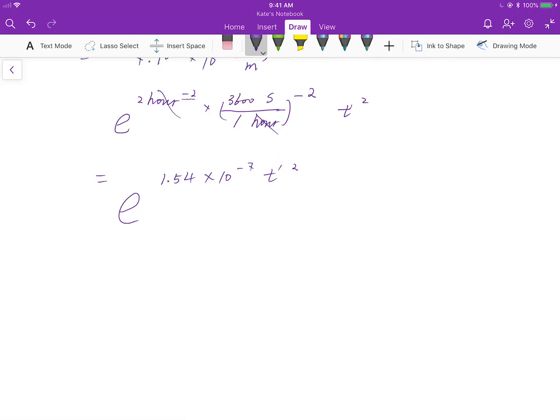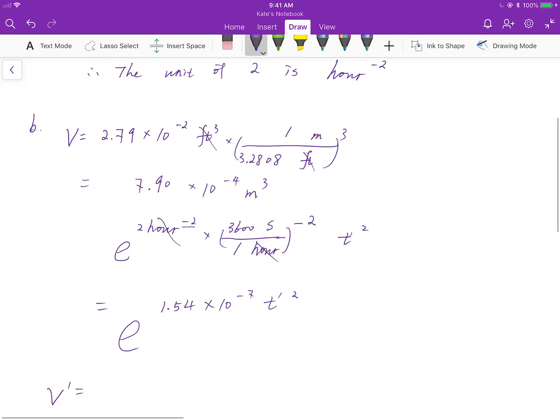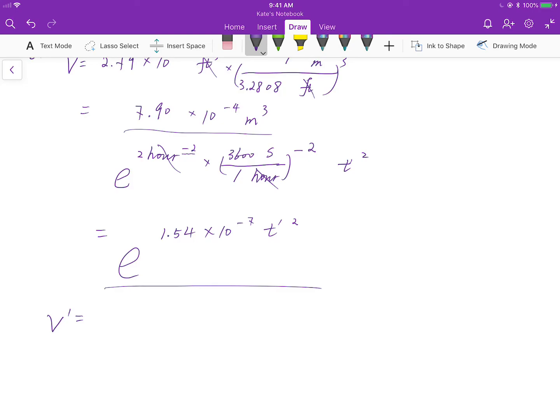Then you can go ahead and write a new equation. V prime is, this is the first part, and this is the second part. 7.90 times 10 to the negative 4. This is cubic meter natural base, 1.54 times 10 to the negative 7, t prime squared. This is a new equation.